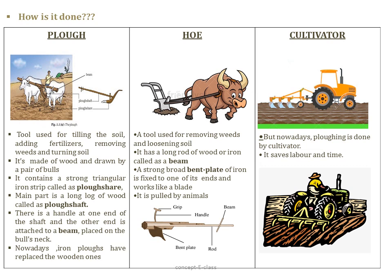Ploughing can be done using three tools: a plough, a hoe, and a cultivator. The plough is an ancient tool used for tilling the soil, adding fertilizers, removing weeds, and turning the soil. It is made of wood and drawn by a pair of bulls. It contains a strong triangular iron strip called a ploughshare, and the main part is a long log of wood called the plough shaft, with a handle at one end attached to a beam placed on the bull's neck. Nowadays wooden ploughs have been replaced with iron ploughs. The hoe is also used for loosening the soil and removing weeds. It has a long wooden or iron rod and a strong bent plate of iron fixed to one end, which works like a blade. It is also pulled by animals.